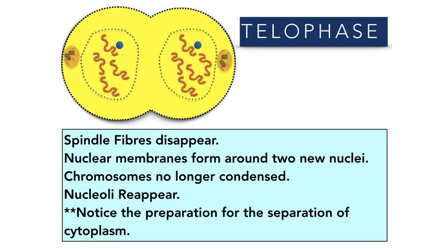The last stage of mitosis is telophase and it's the easiest to recognise. You can see that there are no longer any spindle fibers — they've disappeared. The nuclear membranes are beginning to form around two new nuclei, chromosomes are no longer condensed, the nucleoli reappear, and notice the shape of the cell — it's preparing for the separation of the cytoplasm, i.e., cell division.